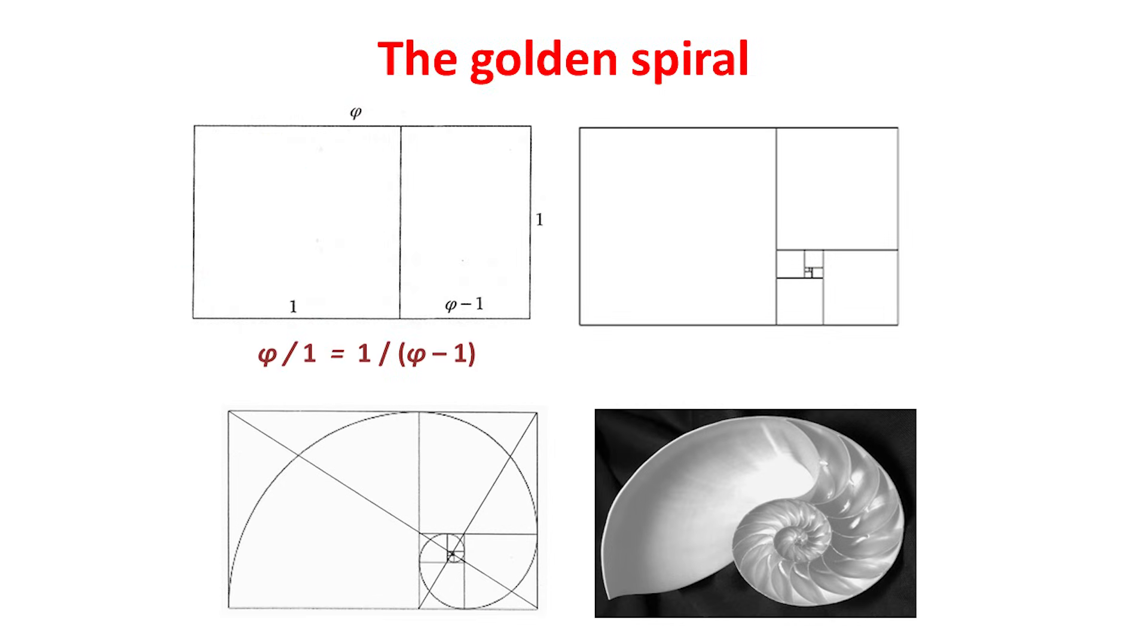A golden rectangle is a rectangle whose side lengths are in the ratio of phi to 1. Above, on the left, is such a rectangle with sides phi and 1. And if we now remove the left-hand square with side 1, we're left with a vertical rectangle whose sides are 1 and phi minus 1. Now this smaller rectangle has the same shape as the original one. And to see why, we recall from our earlier results shown here that phi over 1, the ratio of the side lengths of the original rectangle, is the same as 1 over phi minus 1, the ratio for the second rectangle.